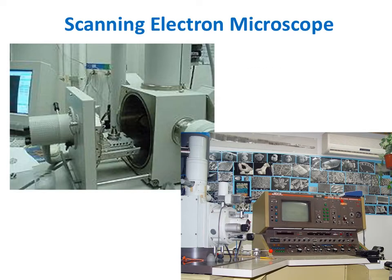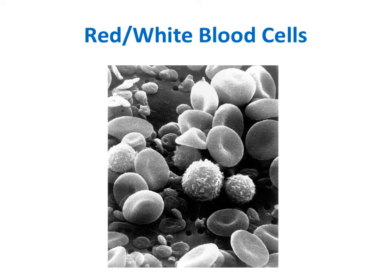The scanning electron microscope works similarly to the transmission electron microscope in that it focuses a beam of electrons through the specimen. However, the scanning electron microscope scans through layers of the specimen and puts them together in order to create a three-dimensional image. Here is an example of red and white blood cells taken with a scanning electron microscope. Compared to the transmission electron microscope image, you now see a three-dimensional picture. Again, the image is captured in black and white, though many you see are colored in after the fact.